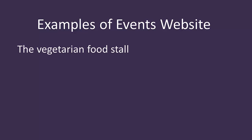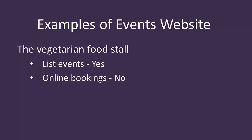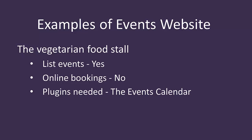The first example is the vegetarian food stall. A producer of homemade vegetarian meals sells their food at local markets around the county. Their website needs to list which events they'll be attending so that people know where to find them and drop in. The website won't actually sell tickets to these events. Do they need to list events? Yes. Do they need to take bookings online? No. Which plugins do they need? Just the Events Calendar, the free version on its own.